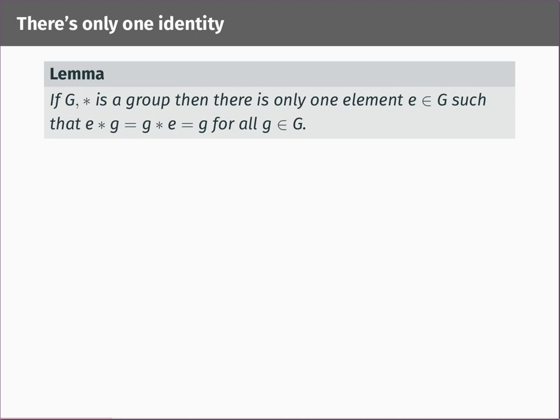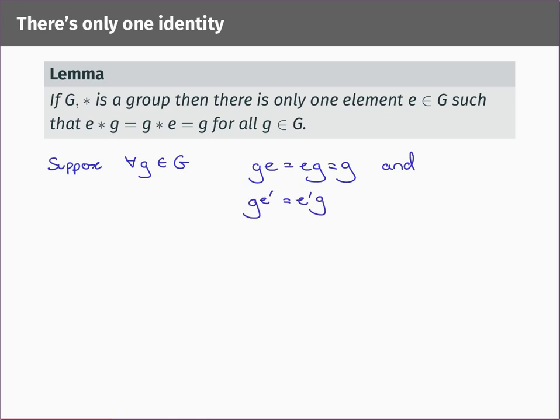What we're going to show is that there is only one such element. So let's suppose that we have two elements satisfying this. For all little g in big G, gE and Eg are equal to g. And E prime is another element satisfying the same thing. A lot of the time in groups we omit the symbol for the binary operation. So gE means g star E and Eg means E star g. Our job is to show that E must equal E prime.